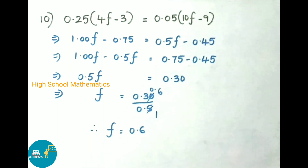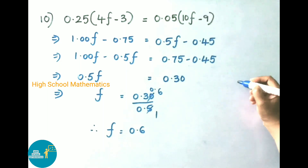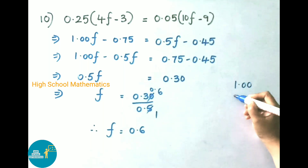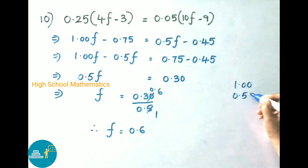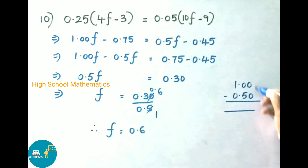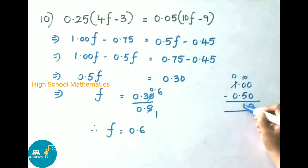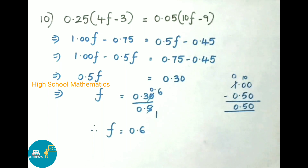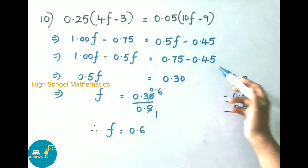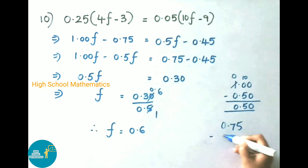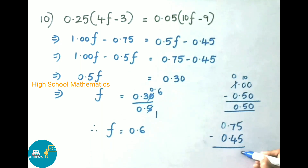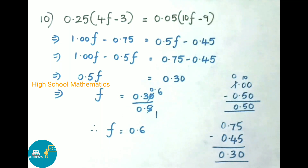See here: 1.00 minus 0.5 — we can write 0.5 as 0.50. Working digit by digit: 0 minus 0 is 0; borrow to get 10 minus 5 is 5; 0 minus 0 is 0. So the answer is 0.50f, or 0.5f. And 0.75 minus 0.45: 5 minus 5 is 0; 7 minus 4 is 3; keep the decimal; 0 minus 0 is 0. So the answer is 0.30.